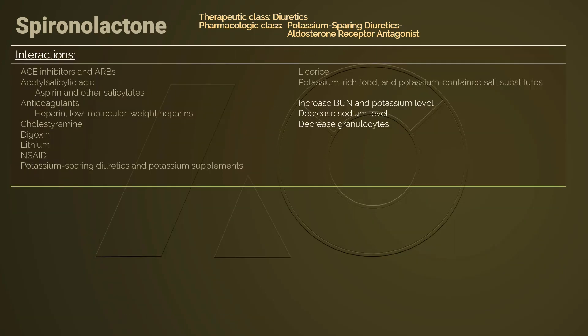Listed here are medications, herbs, and diet that could interact with spironolactone. Antihypertensives that work on the RAS could add to the effects and adverse effects of spironolactone; use the combination with caution and monitor blood pressure, heart rate, electrolytes, and kidney status. Acetylsalicylic acid (aspirin) and other salicylates decrease or block the therapeutic and diuretic effects of spironolactone.